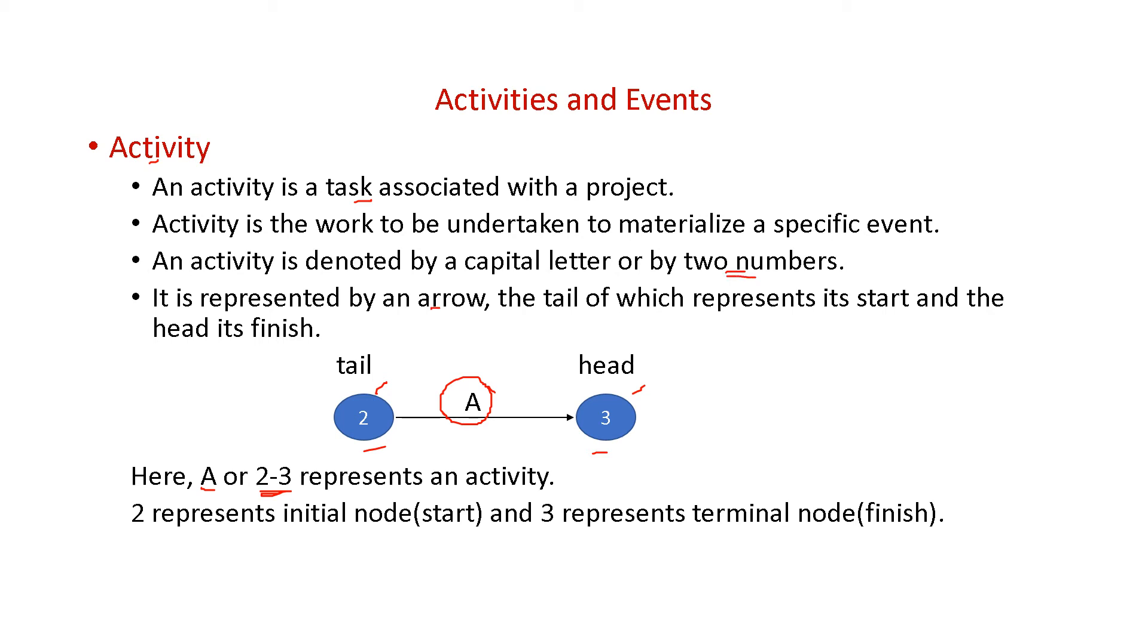It is represented by an arrow. That is arrow shows how the flow is going which is a source and which is a destination. Here two represents the initial node. There is a starting node and three represents the terminal node or the finishing node. And A is the activity. Two and three are the nodes or events.